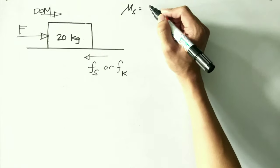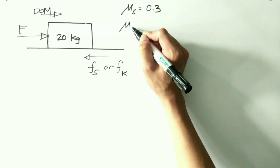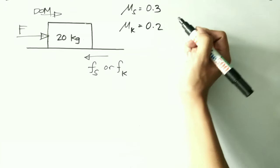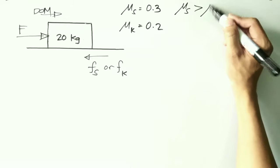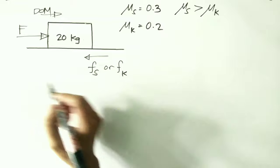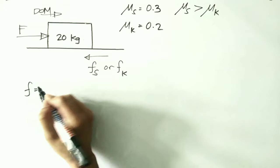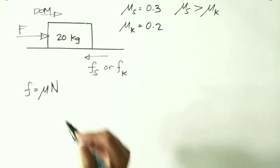We have our static friction coefficient as 0.3 and the kinetic frictional coefficient equal to 0.2. Take note that the coefficient of static friction is always greater than the coefficient of kinetic friction, because it is always harder to start a motion than to continue with your motion. I would compute for the frictional force of an object in contact with the surface, which is equal to the coefficient of friction multiplied by the normal force acting on the surface of contact.